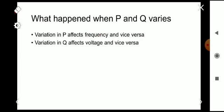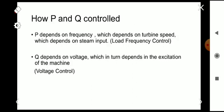What happens when P and Q vary? The variation in P affects frequency, and vice versa — if there is a variation in frequency it will affect the active power P. The variation in Q, that is the reactive power, affects the voltage, and also if there is a change in voltage it will affect the reactive power Q.